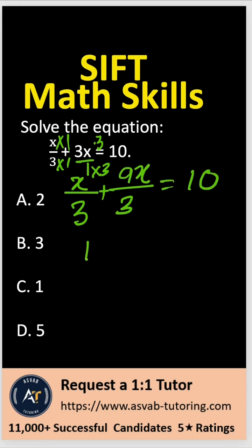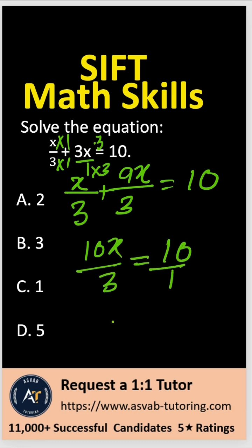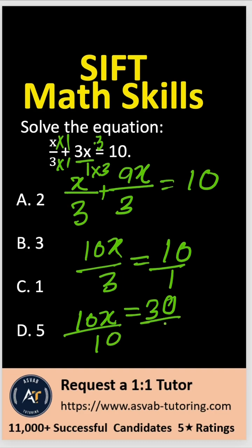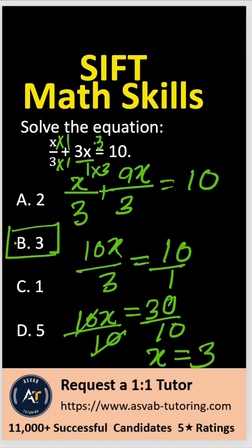So now that gives you 10x over 3 equal to 10. If you cross multiply that, it gives you 10x equal to 30. Divide both sides by 10 — the 10s cancel out — so that gives you x equal to 3. The correct answer is option B.